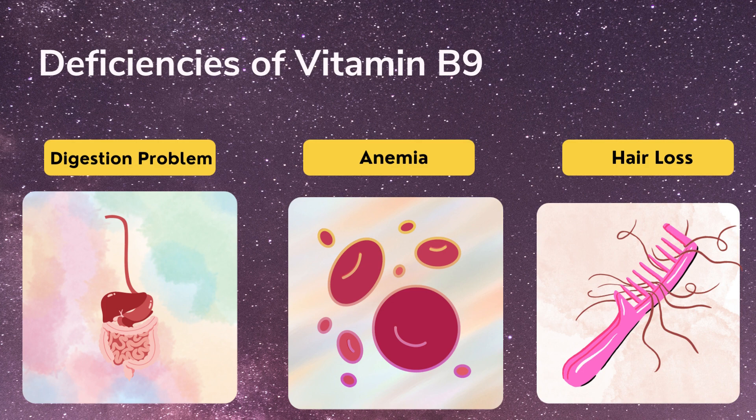Growth and regeneration all take place with the help of DNA synthesis, so it's very important to maintain proper vitamin B9 levels. To avoid all of these problems, take vitamin B9 through the sources mentioned: legumes, leafy vegetables, avocado, and citrus fruits like grapefruit, oranges, and lemon.